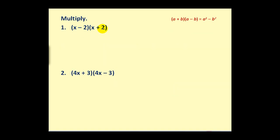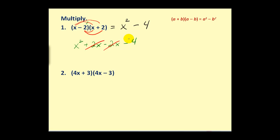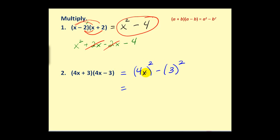Let's try another one. If you recognize this pattern where the two terms are the same — one's a sum and one's a difference — this will equal the first term squared, or X squared, minus 2 squared, which is 4. However, if you're ever not sure, we can just do it the long way: X times X, X times 2, negative 2 times X, negative 2 times positive 2. We would have X squared plus 2X minus 2X minus 4, and we can see positive 2X and negative 2X are opposites — those cancel, which results in our special product. On this last example, let's take the shortcut. We notice the terms are the same; one's a sum, one's a difference. So the first term of the product will be the first term squared minus the second term squared, giving us 16X squared minus 9. You can see it does save some work, but if you're not sure, work it out the long way and you'll never miss it.